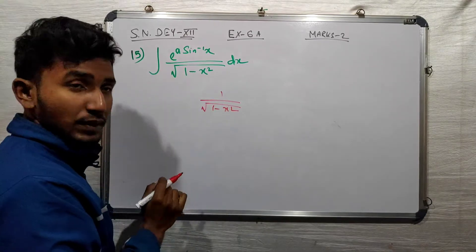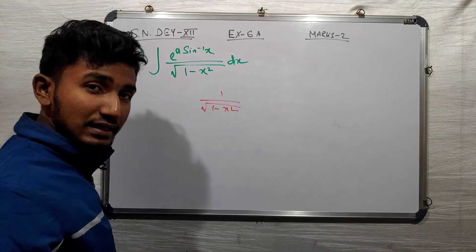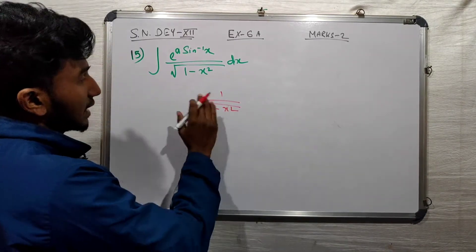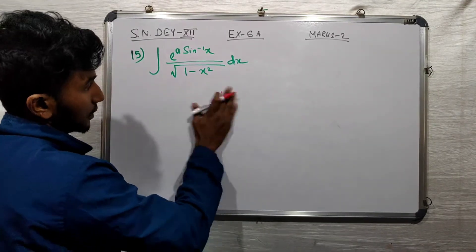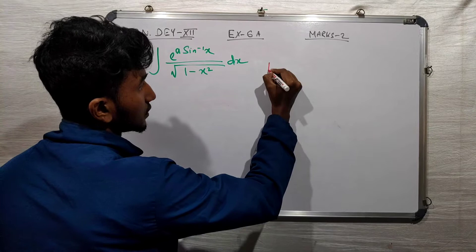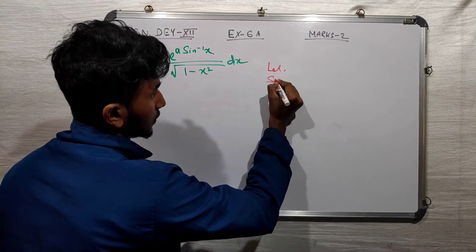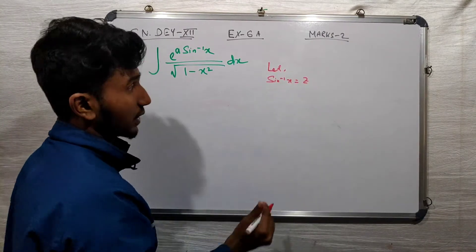So here, sine inverse x is present, and root over 1 minus x squared is present. So we will let sine inverse x equal z. Let sine inverse x equals z.